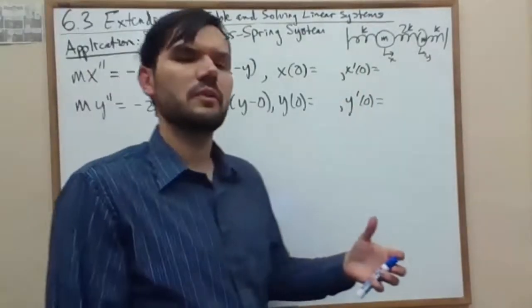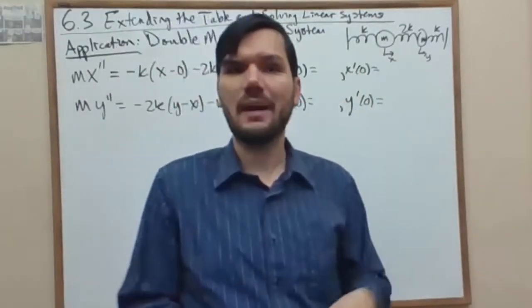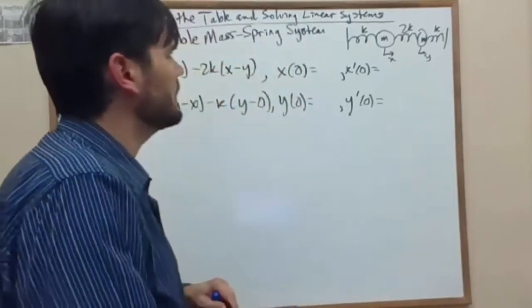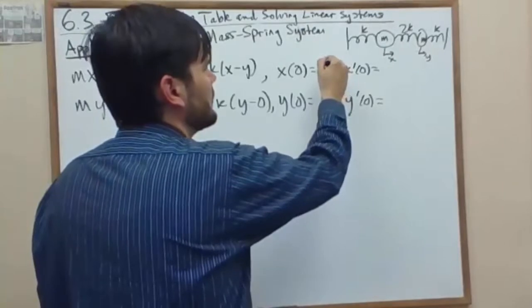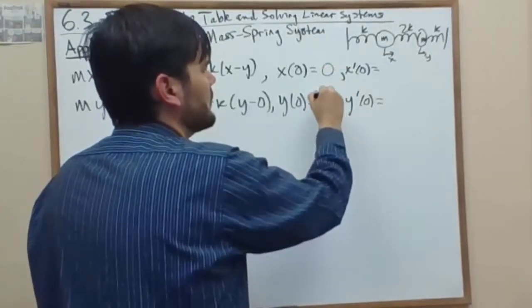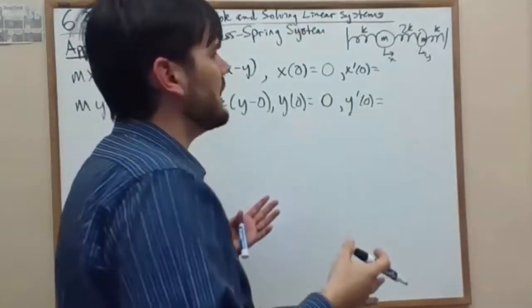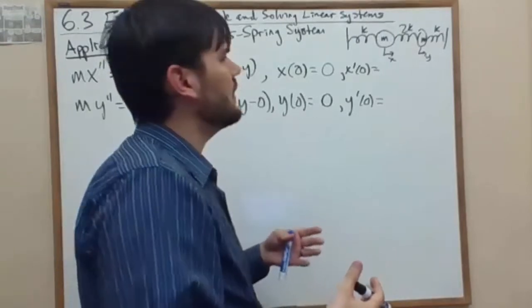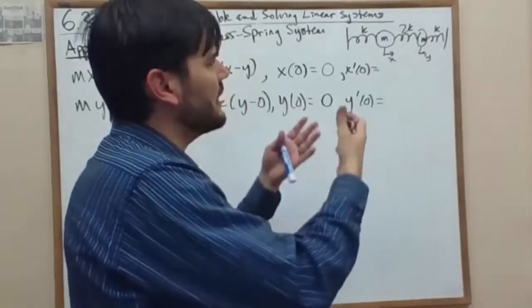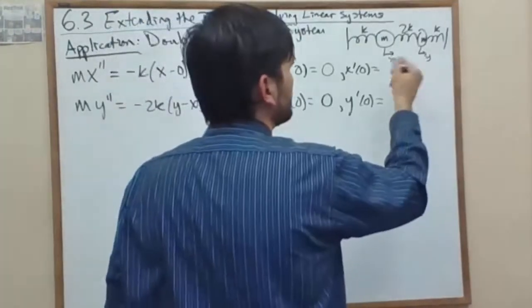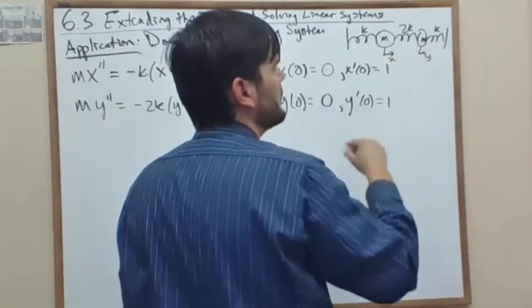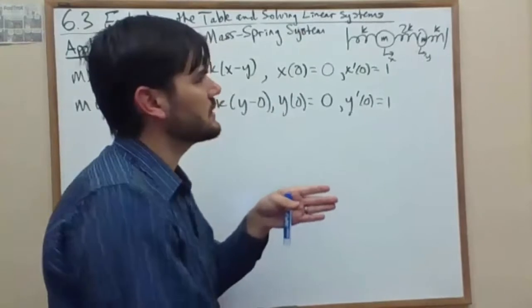So for this example, we're going to use some symmetric boundary conditions. I will choose to start at zero for each of these masses and then give them a symmetric initial velocity of one, both moving in the positive direction.